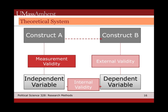We think about validity as something that could go wrong along any of these links. The one we're focusing on is how things can go wrong if our measurement — the way our construct is captured in our variable — is invalid.